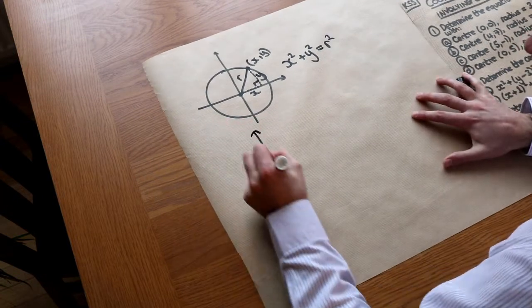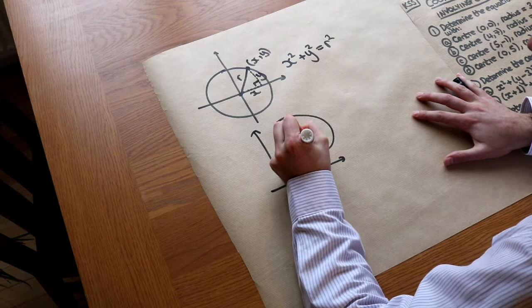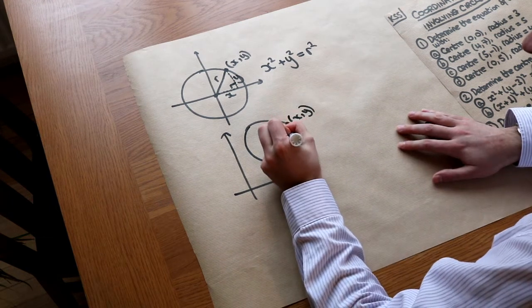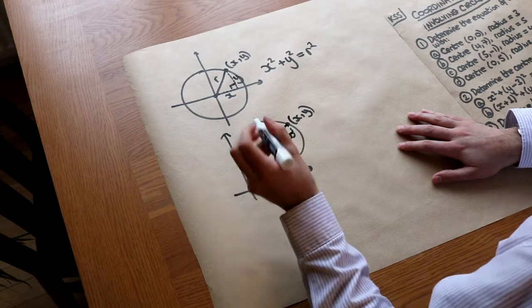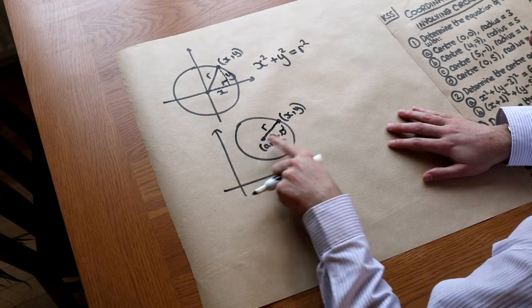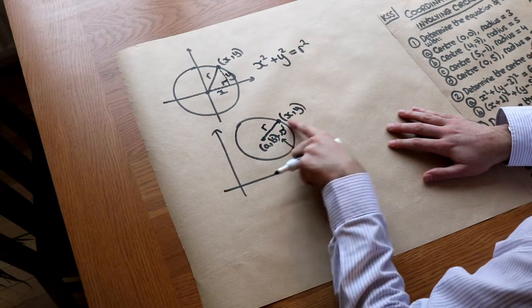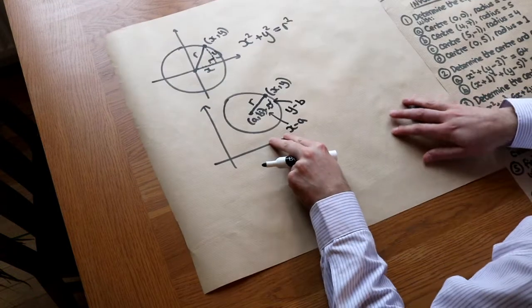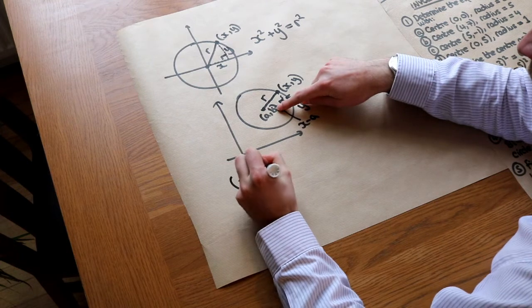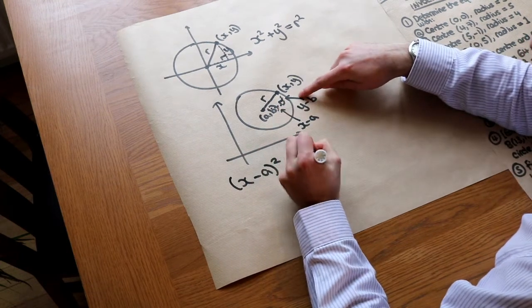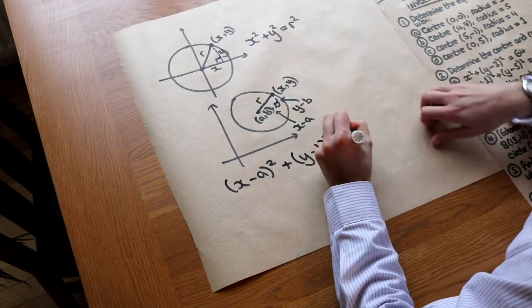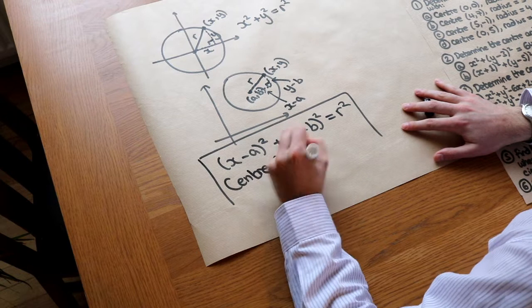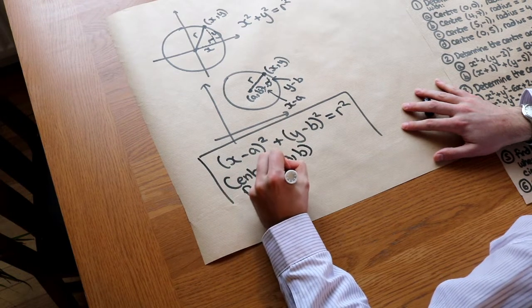Now let's say we put the circle somewhere else with centre AB. For a generic point XY on the circle with radius R, forming a right-angled triangle gives us a horizontal distance of X minus A and a vertical distance of Y minus B. Applying Pythagoras again: (X minus A) squared plus (Y minus B) squared equals R-squared. That is the equation of a circle with centre AB and radius R.